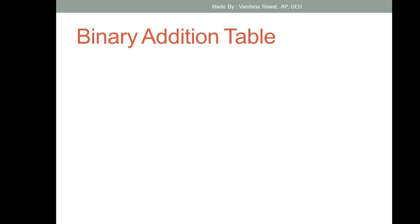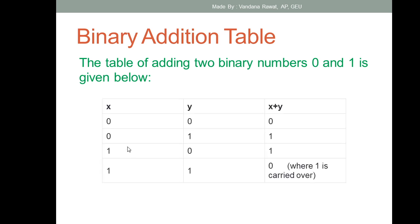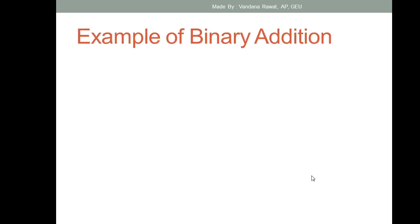When we represent these four rules in a binary addition table with columns x and y: if x is zero and y is zero, then x plus y equals zero. Zero plus one gives one, one plus zero gives one, but one plus one equals zero with one carried over. Let's understand this with the help of an example.